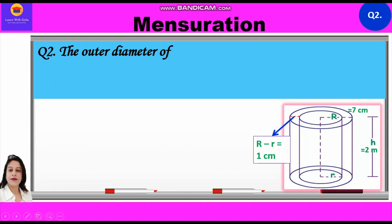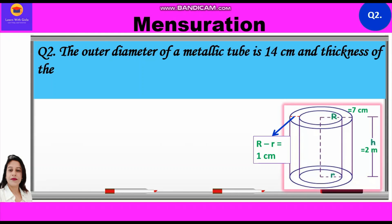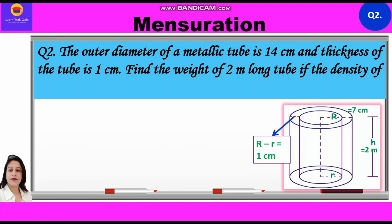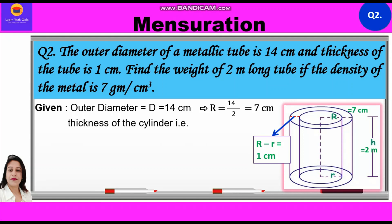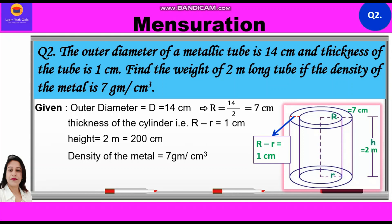Now let's start question number 2. The outer diameter of a metallic tube is 14 cm and the thickness of the tube is 1 cm. Find the weight of a 2-metre long tube if the density of the metal is 7 grams per cm³. Given: outer diameter D = 14 cm, so R = 7 cm; thickness R − r = 1 cm; height = 2 metres = 200 cm; density = 7 g/cm³. We need to find the weight of the tube.